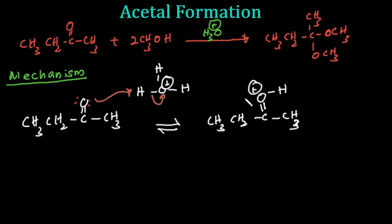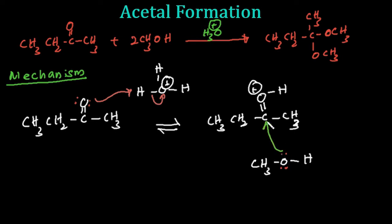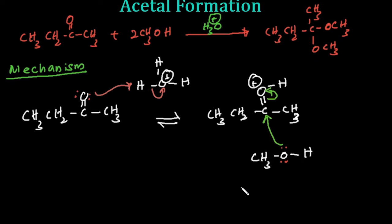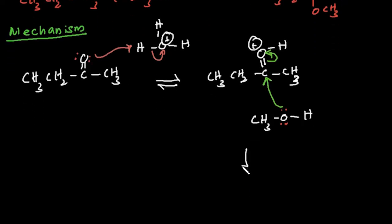We also make water as a byproduct. Now, we have alcohol in our reaction mixture. This alcohol oxygen has a lone pair, and this lone pair attacks the carbonyl carbon, breaking that bond and making a new intermediate.